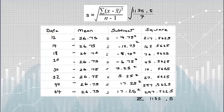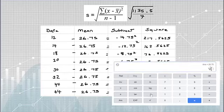The last step is to take the square root. When we do that, we get our sample standard deviation, 12.736.